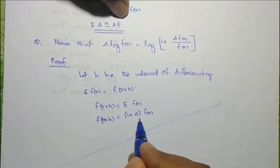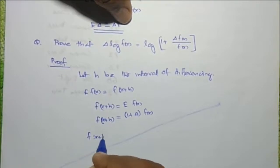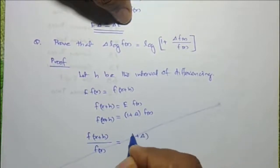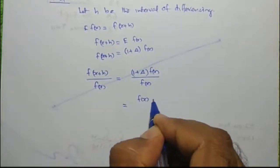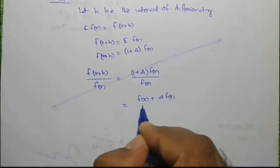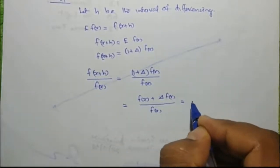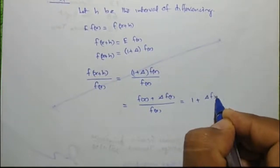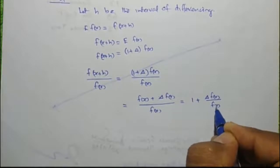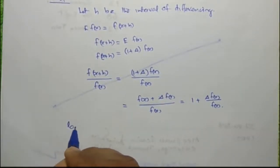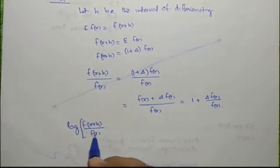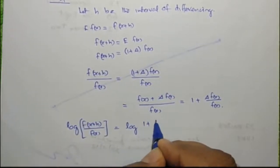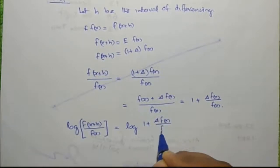So f of x plus h divided by f of x equals 1 plus delta f of x divided by f of x, which equals f of x plus delta f of x all divided by f of x, giving 1 plus delta f of x by f of x.